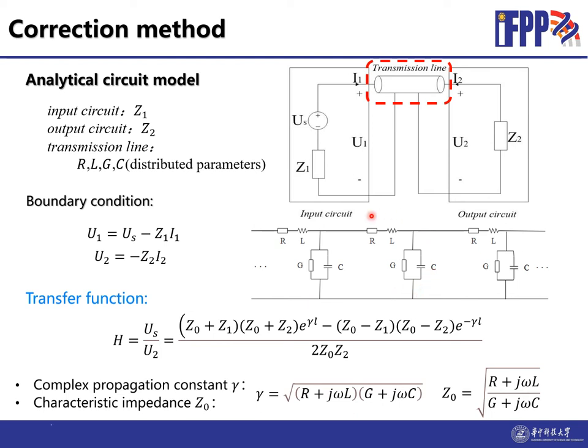The transmission line is equivalent to a series of infinite elements like this figure. Each element consists of four distributed parameters: the resistance, the inductance, conductance, and capacitance parameters. With the boundary conditions, the transfer function between the Us and U2 can be calculated. The transfer function is not only related to the input circuit and output circuit, but also the transmission line characteristics, which is shown in the complex propagation constant and the characteristic impedance.